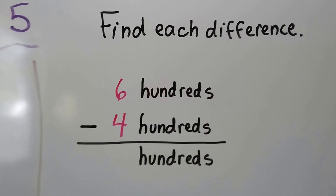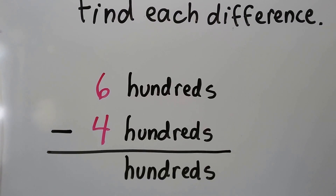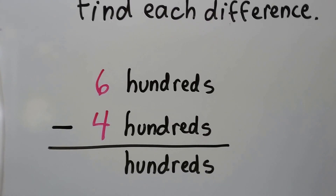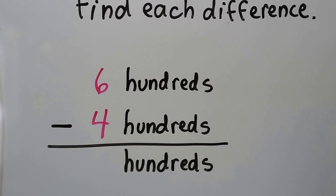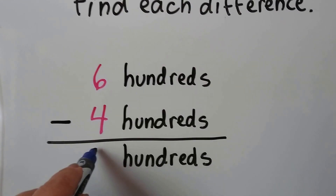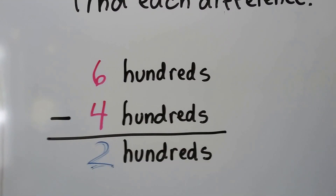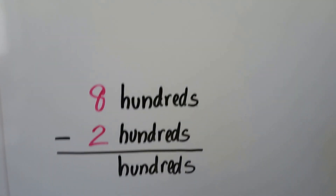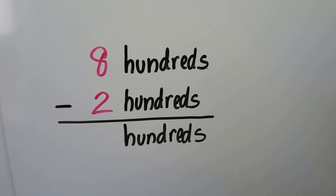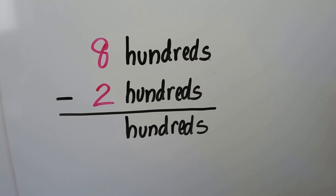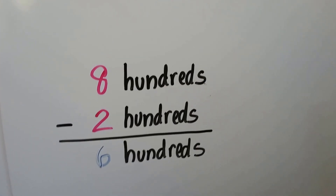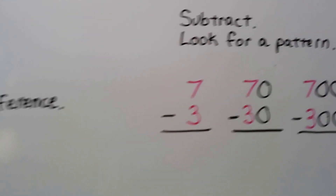Let's find each difference. If we have six hundreds and we're subtracting four hundreds, we just think six minus four. We can count back: six, five, four, three, two — six take away four is two, so the answer is two hundreds. Now let's try eight hundreds minus two hundreds. Eight minus two is six, so the answer is six hundreds.